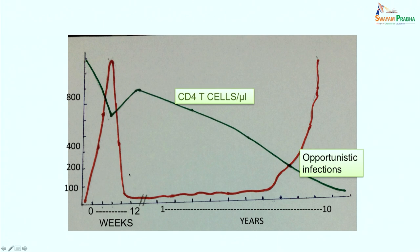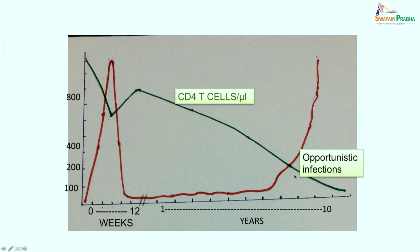During the acute retroviral period, there is depletion of CD4 lymphocytes. When this phase resolves, CD4 counts increase again but never fully return to normal. There is then a gradual decline in CD4 T cells as the virus continuously destroys them. When CD4 T cells fall below 200, opportunistic infections begin developing due to the decline in immunity, coinciding with the signs and symptoms of AIDS.